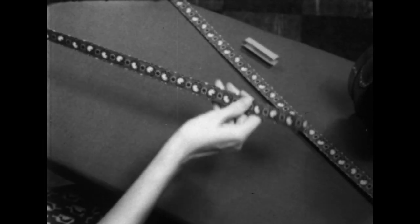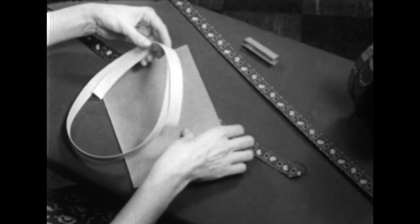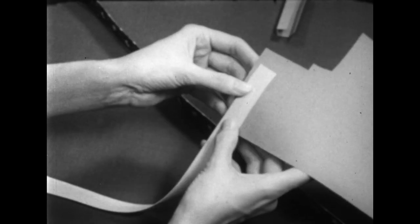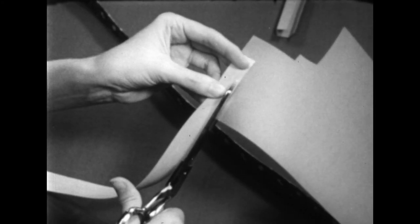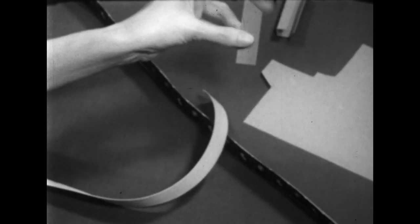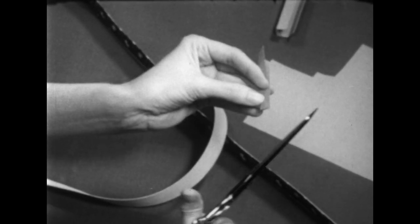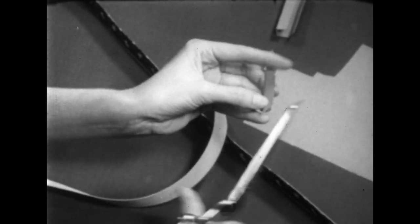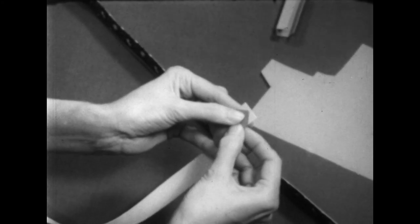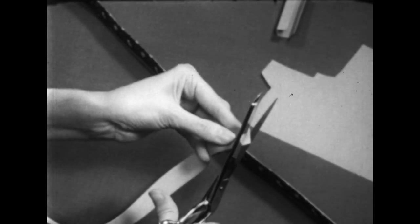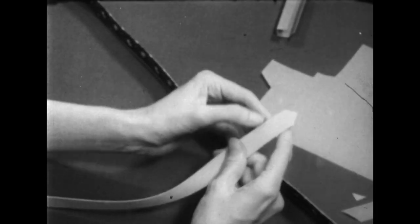One end of the belt should be cut to a point. You can very quickly cut a pattern for that point out of paper. First, a strip just the width of your belting. Then fold that right through the middle and trim to get the point you want. Hold that right on your belting and trim. And you have a nice, well-centered point.